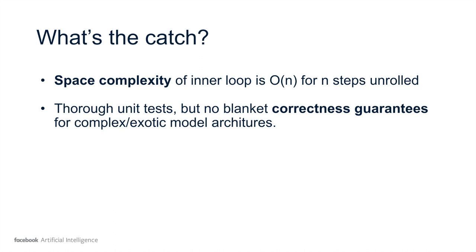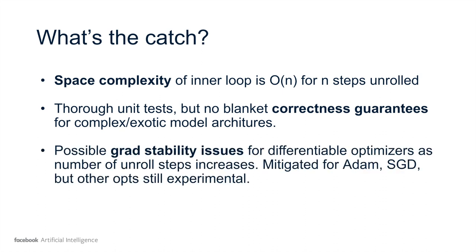There are thorough unit tests for the library, but there's no blanket correctness guarantees for complex or exotic model architectures in that we develop this primarily reactively. If someone notices there's a significant problem, then we can investigate, but we can't guarantee upfront that this will always work for everything. We're just fairly confident it will. There are possible gradient stability issues for differentiable optimizers as the number of unrolled steps increases, and this is somewhat inherent with this class of meta-learning approaches. We have some mitigating strategies that are implemented for Adam and SGD, but for other optimizers that are still experimental and not perfect.